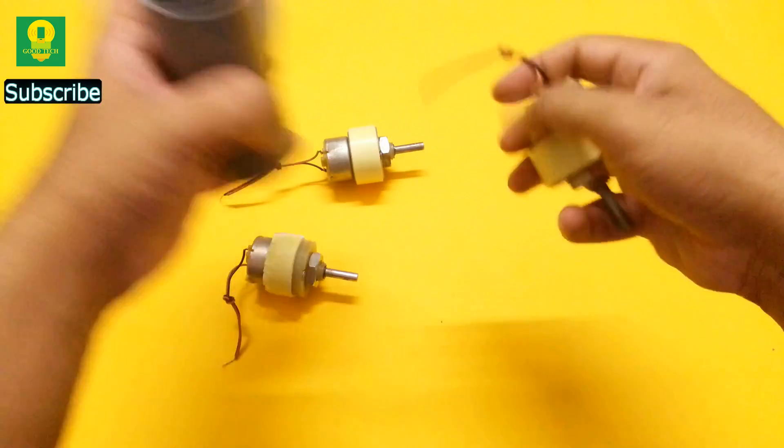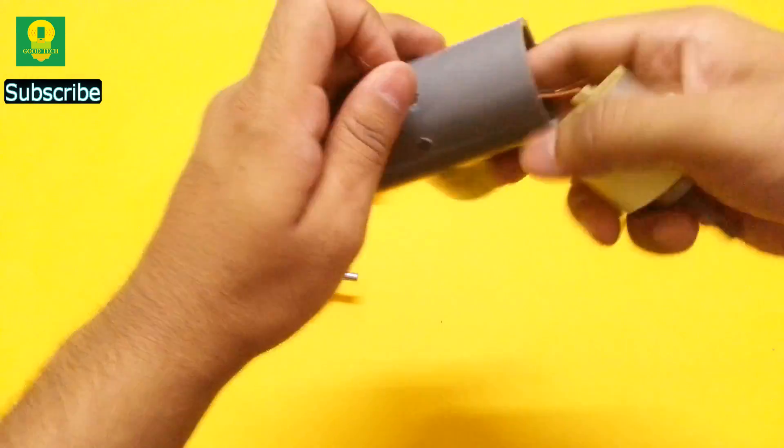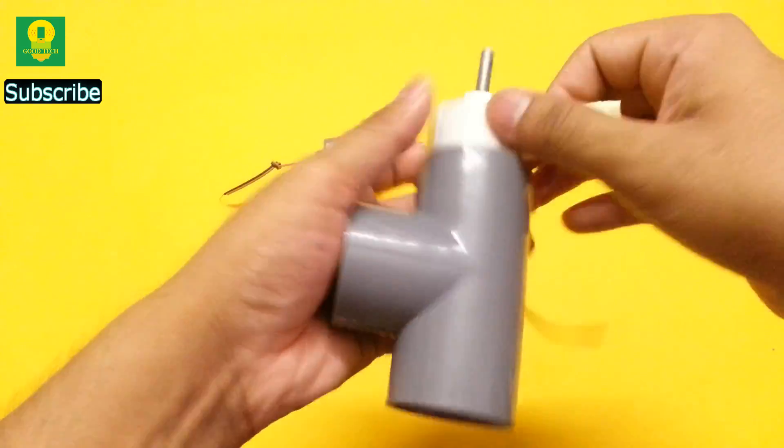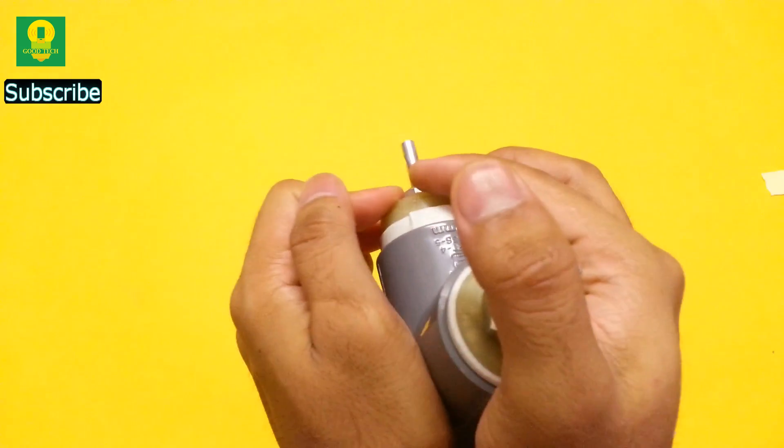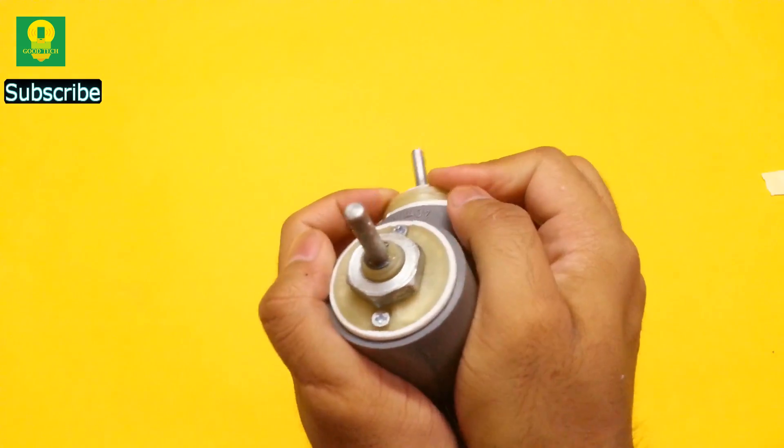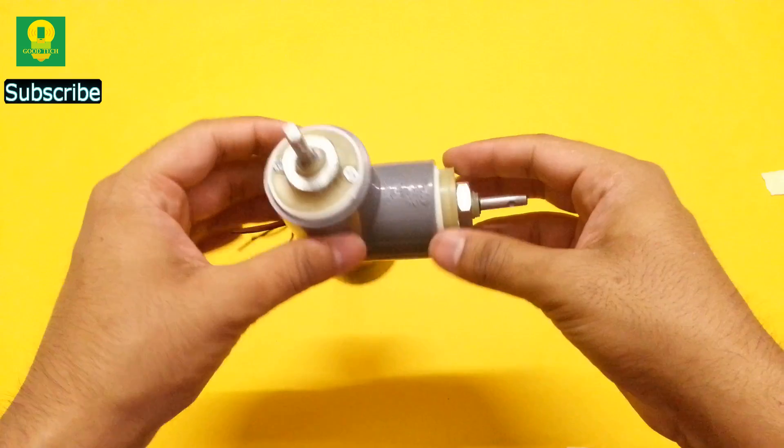Insert the wires through the hole and fit all the three motors in the mouth of the PVC tee. Make sure that the motor at the junction is slightly bulged out.